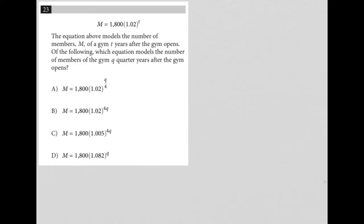So this question starts off by giving us this equation here: M equals 1800, 1.02 to the T power. It goes on to say the equation above models the number of members M of a gym T years after the gym opens. Of the following, which equation models the number of members of the gym Q quarter years after the gym opens?